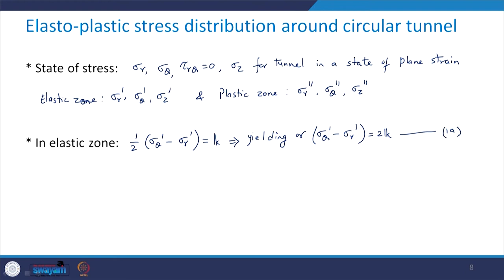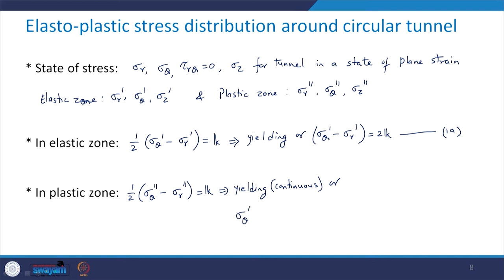In the plastic zone, we have half times (sigma_theta double-prime minus sigma_r double-prime) equals kappa, where yielding is continuous. This can be written as sigma_theta double-prime minus sigma_r double-prime equals 2 kappa. This is equation 1b.